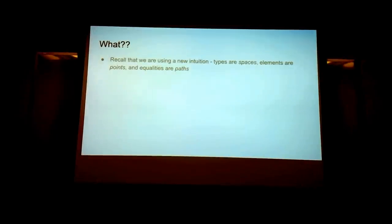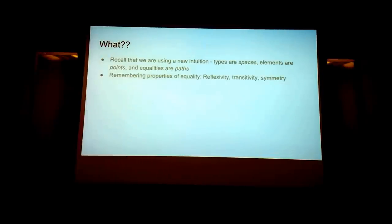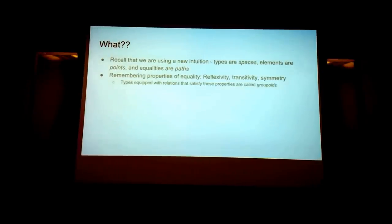Recall that we are using a new intuition: types as spaces, elements as points, and equalities as paths. Remembering the properties of equality — reflexivity, transitivity, and symmetry — types equipped with relations that satisfy these properties are called groupoid types.